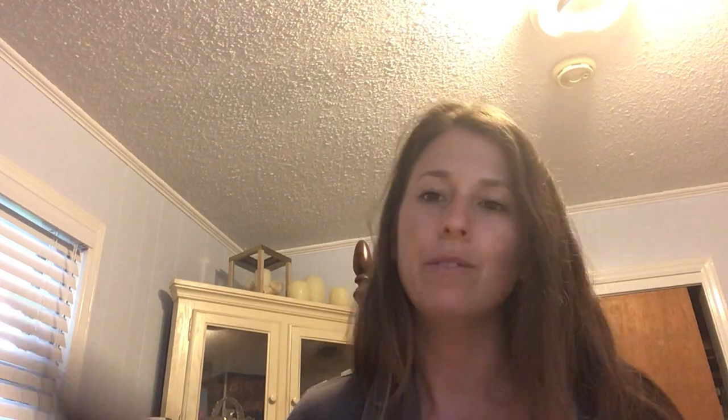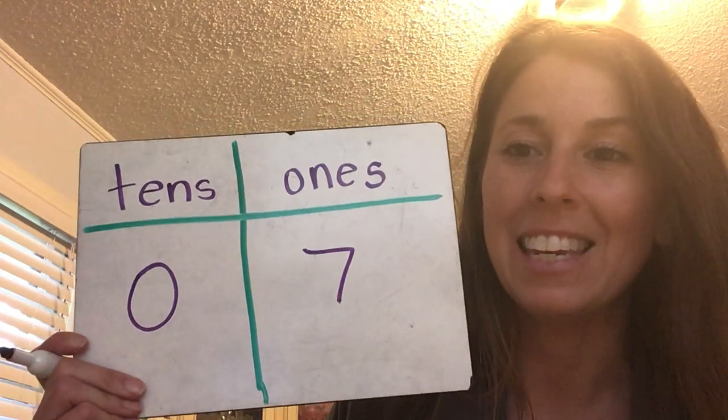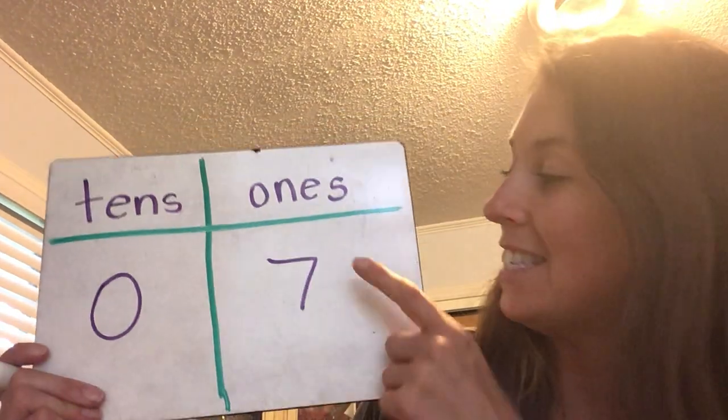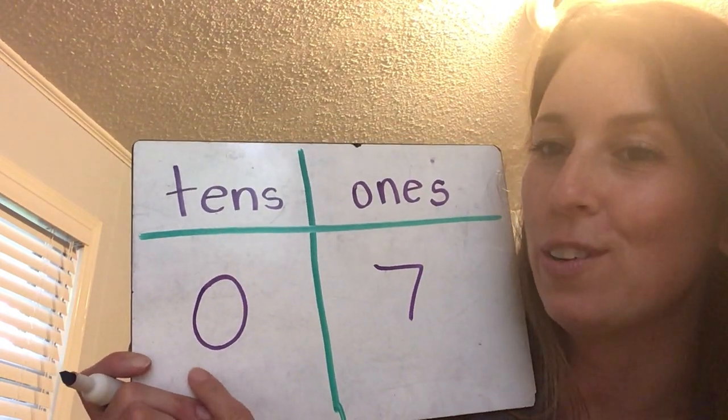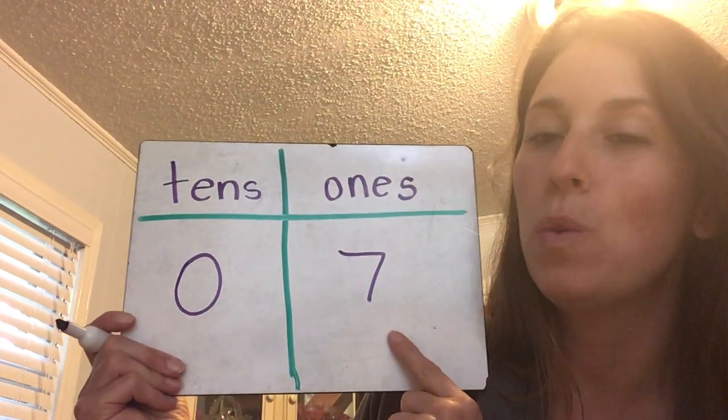Erase. Listen to my next clue. This number has zero tens and seven ones. What number did we make? Seven. Seven ones is not a group of ten yet, so there are zero tens and seven ones — we made the number seven.